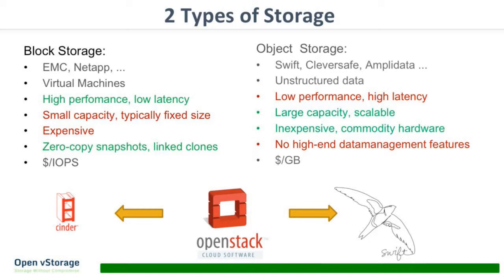On the other side, you have object storage. Names like OpenStack Swift, Cleversafe, and AmpliData. You typically store unstructured data, files, or backups there. It's mainly for non-critical, non-virtual machine data — built for backups, file repositories, or video. It's relatively slow but very scalable, so you can build petabyte clusters. It's inexpensive and software-based, running on JBODs without expensive controllers. But you don't have high-end data management features — only put and get. No snapshot functionality.